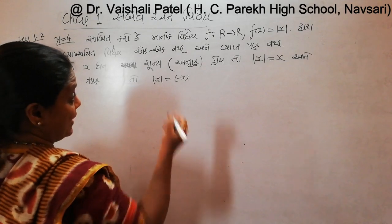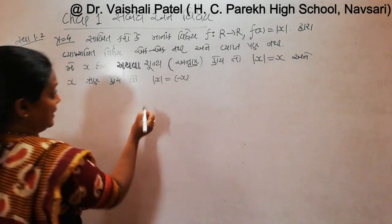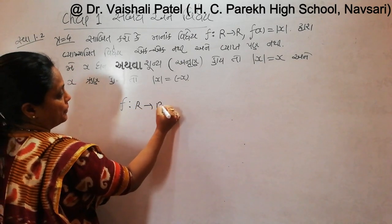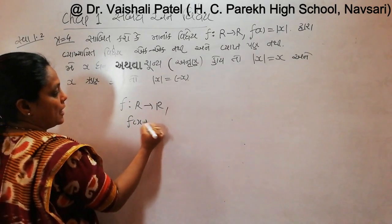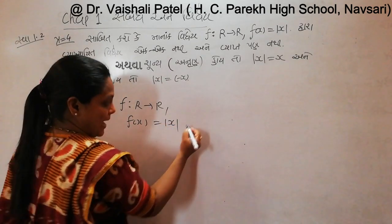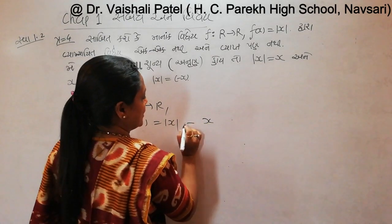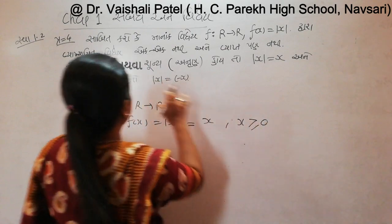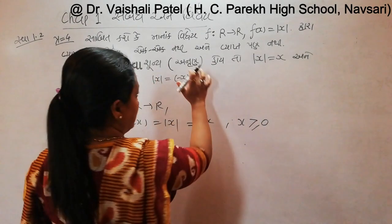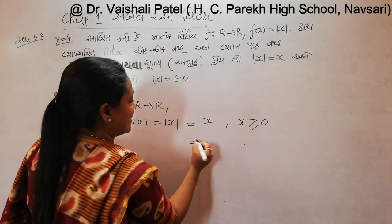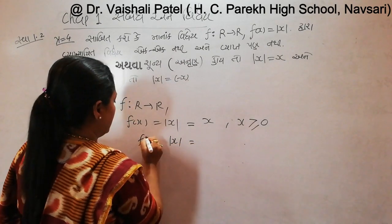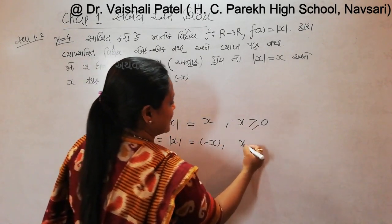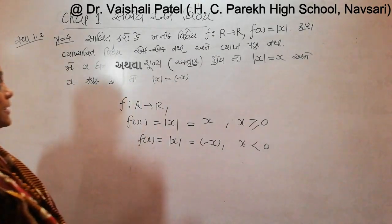Let's take the modulus function. F from R to R, f of x is equal to |x|, where f of x equals x when x is greater than or equal to 0, and f of x equals minus x when x is less than 0.